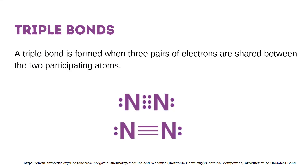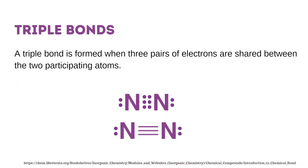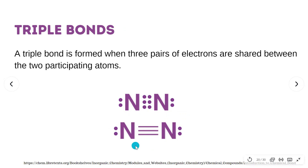Now let's go to the triple bond. A triple bond is formed when three pairs of electrons are shared between two participating atoms. Triple covalent bonds are represented with three dashes and are the least stable type of covalent bond. In this example, you have the formation of a nitrogen molecule. Each nitrogen atom has five valence electrons and provides three electrons to form electron pairs for sharing. Thus, a triple bond is formed between the two nitrogen atoms.